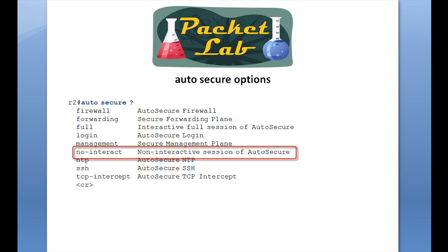The other big option to be aware of is no interact. If you issue auto secure no interact, you won't get the auto secure dialogue. Basically, Cisco will go ahead and say, you're telling me you don't need any input from you, and it will turn off those features and do the configuration right away with no input from you.